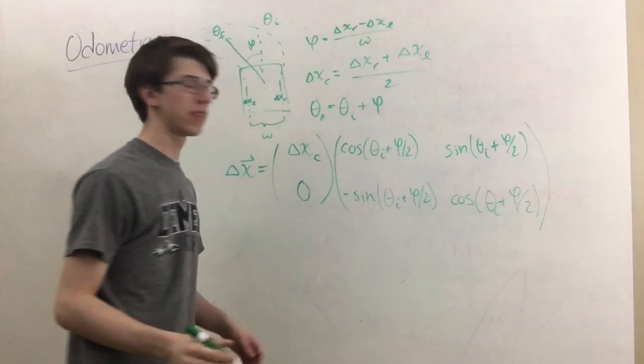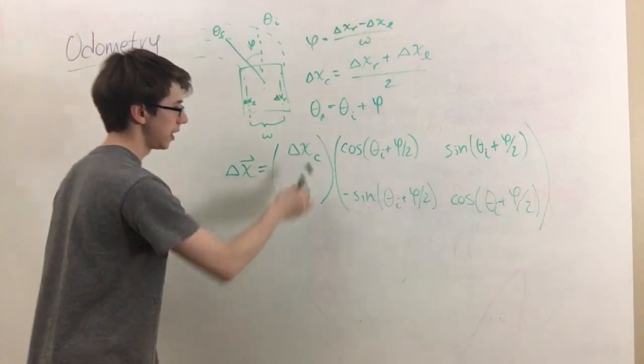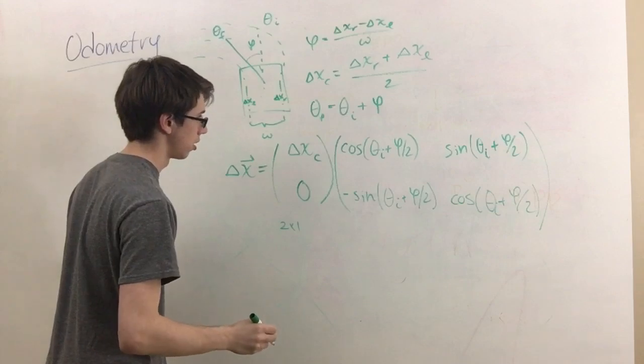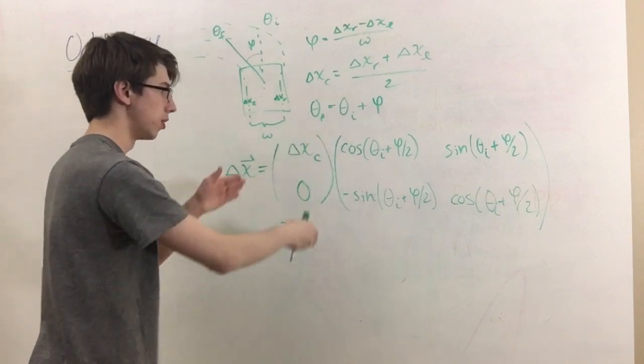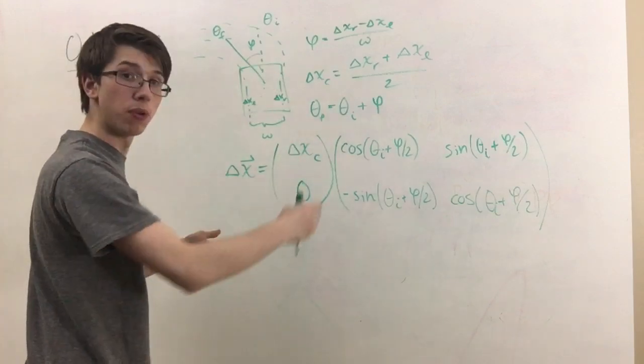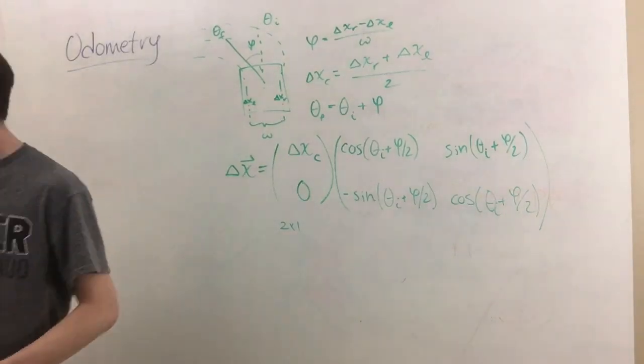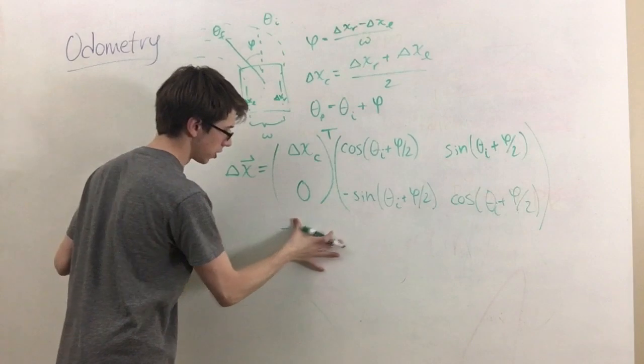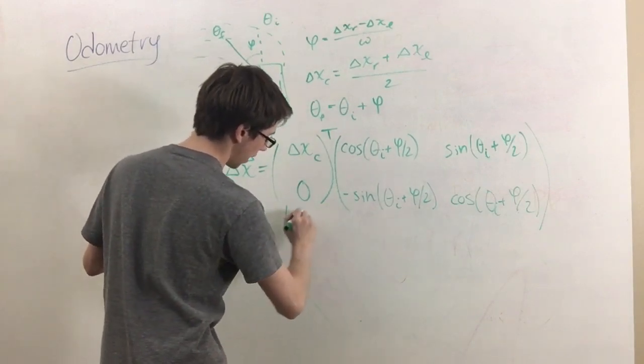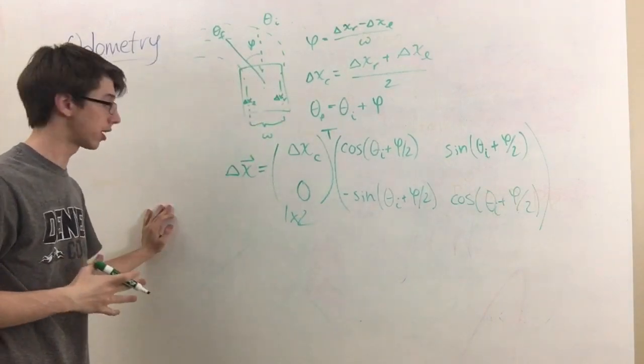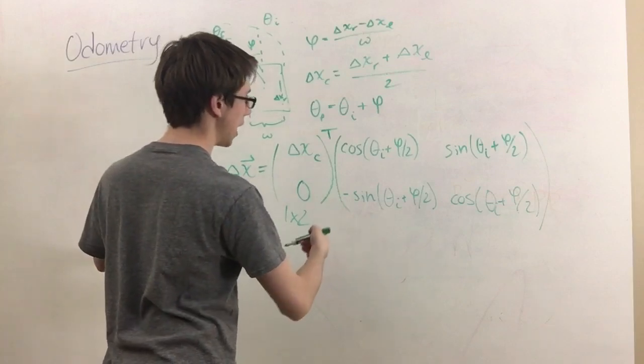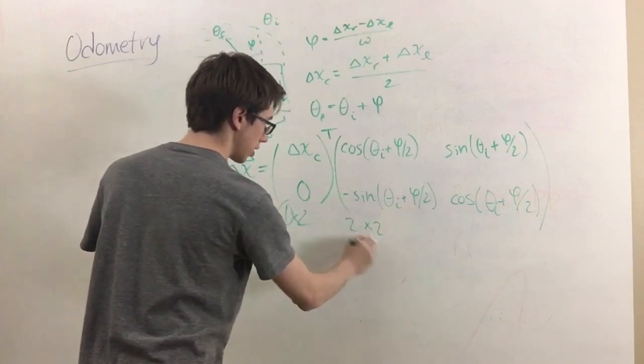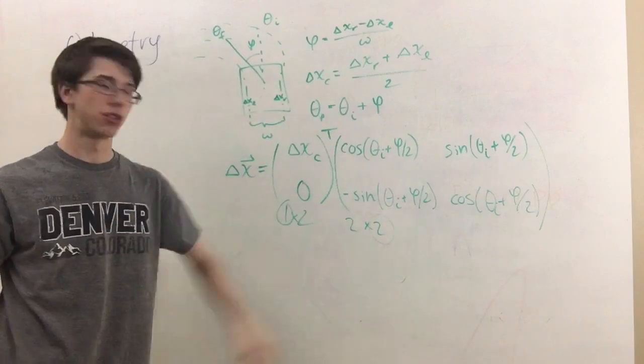Now this is a 2 by 1 matrix, so we actually have to take the transpose of it. So we have to take the transpose of this matrix in order to turn it into a 1 by 2 matrix. And then we multiply that by this 2 by 2 matrix, and so our result is going to give us a 1 by 2 matrix.